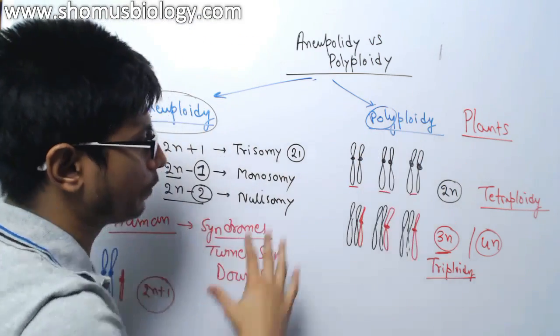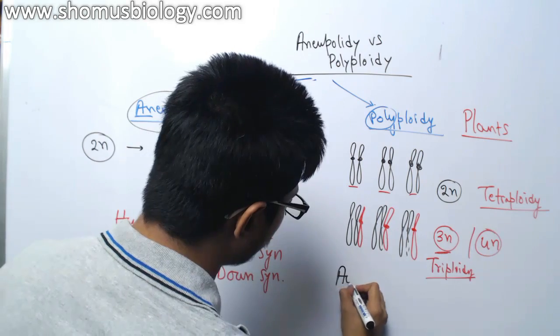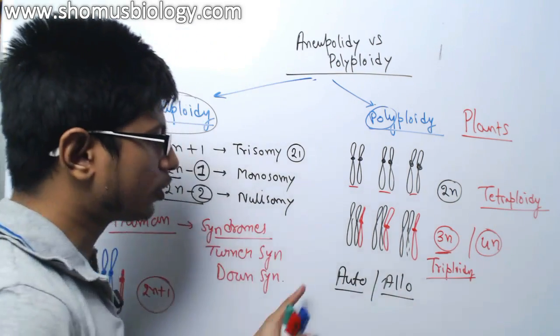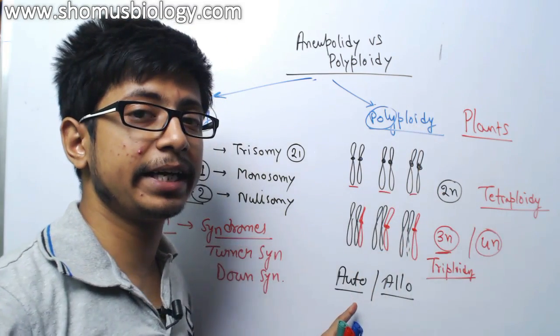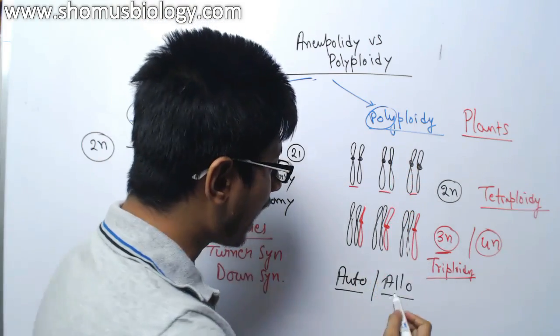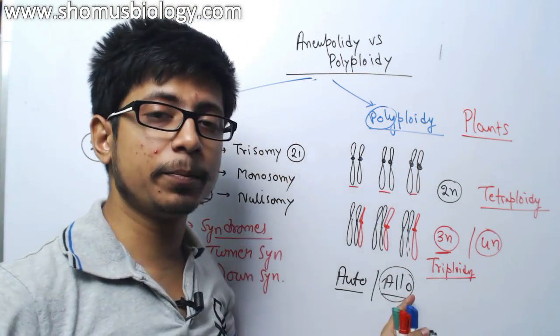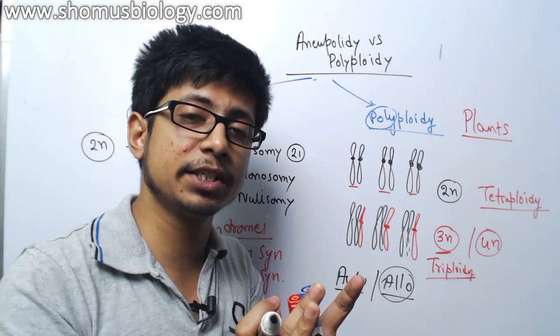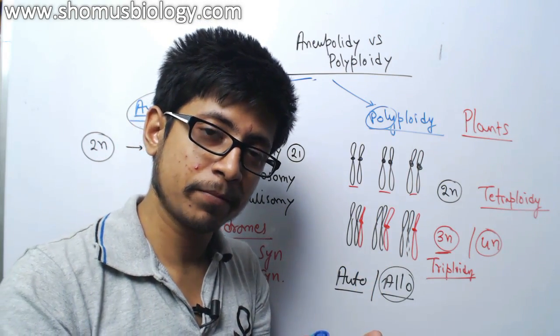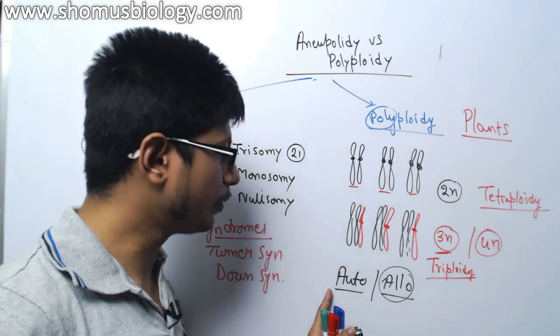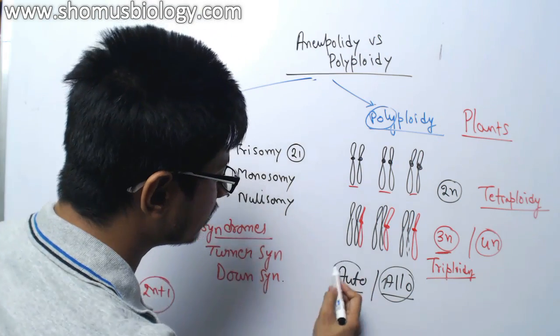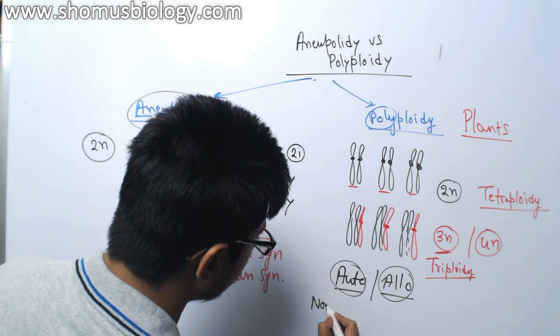There are 2 types of polyploidy. Autopolyploidy and Allopolyploidy. Autopolyploidy means when this polyploidy is originated from this organism's body itself. Allopolyploidy means when the polyploidy originated due to hybridization between 2 different cells or 2 different organisms. Auto means by the same cell, it generates this polyploid situations.